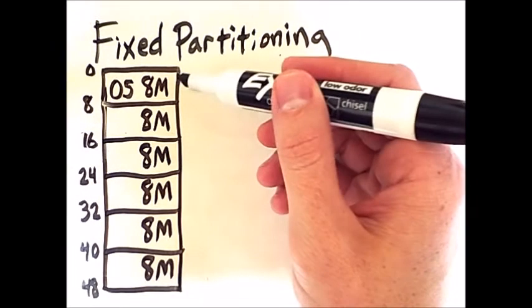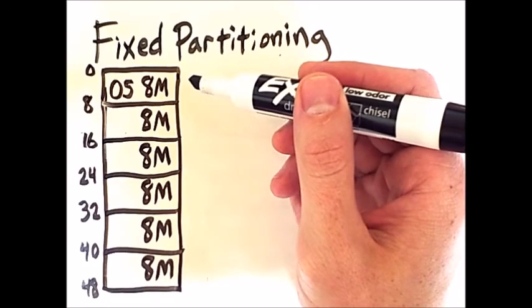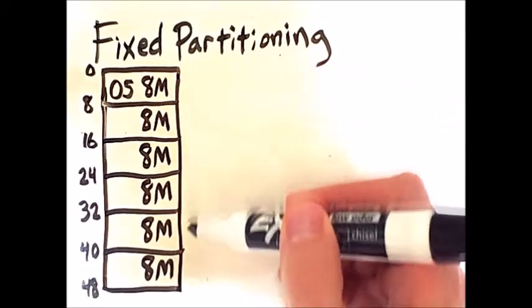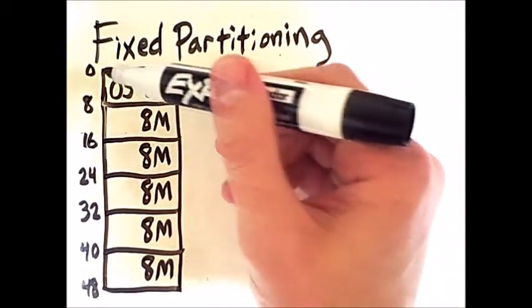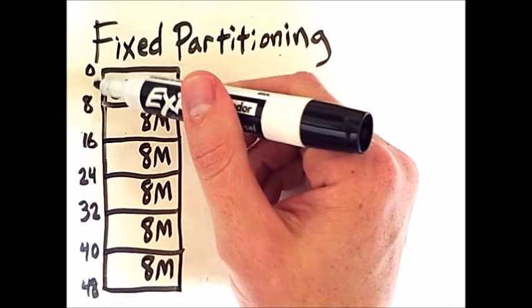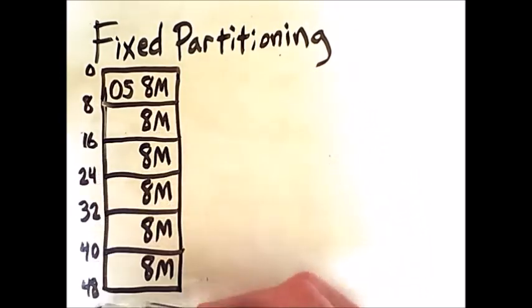The first chunk is reserved for the operating system, but the others can be filled by other processes. Here we see the memory addresses labeled in terms of the megabyte starting point.